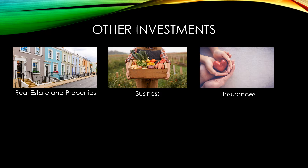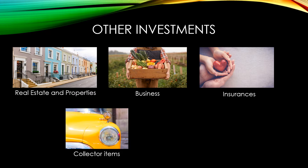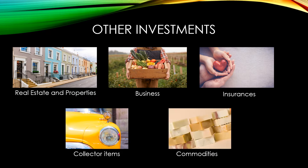Next, we have insurance. Insurance is a legally binding contract where the policyholder gets financial protection when uncertainties happen. Insurance types include life, health, auto/car, and long-term disability insurance. Next, we have collector items — anything that can be sold at a higher price than it was bought. Finally, we have commodities. Gold and silver are kinds of commodities whose values grow over time, which can result in capital gains.